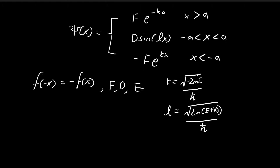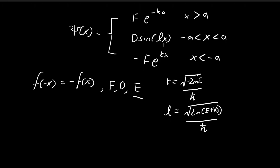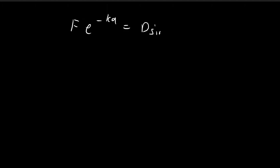We're going to come up with equations to deduce what the energy level E should be. To do that, we consider the continuity requirement at x = ±a. Because ψ(x) is an odd function, we only need to consider continuity at one side — the other side will automatically be continuous as well. First, ψ(x) must be continuous at x = a, which gives: F·e^(-ka) = D·sin(la).